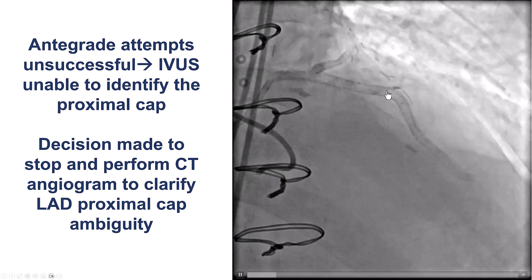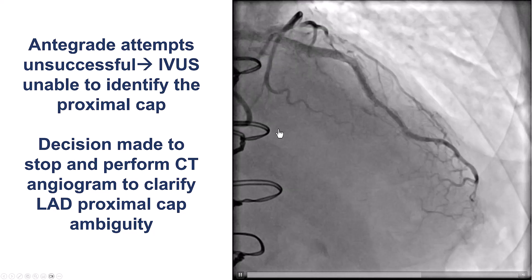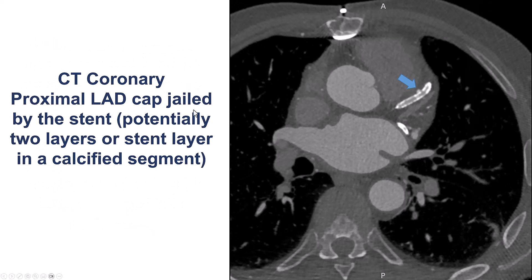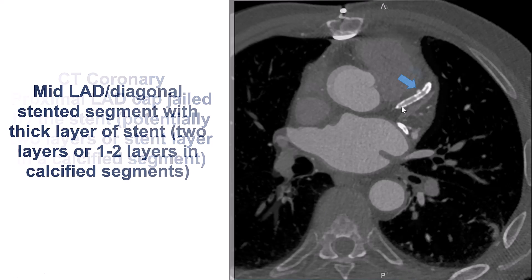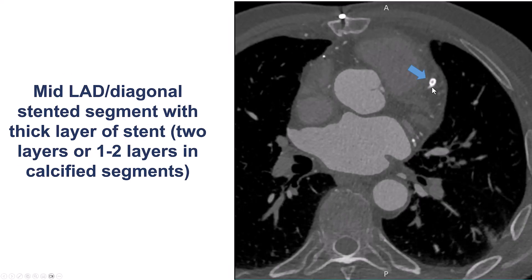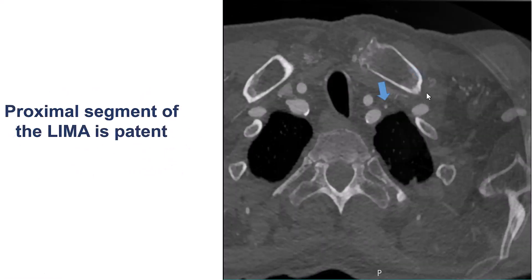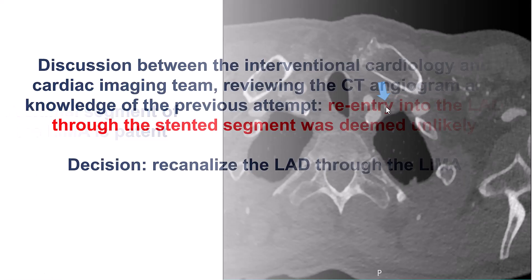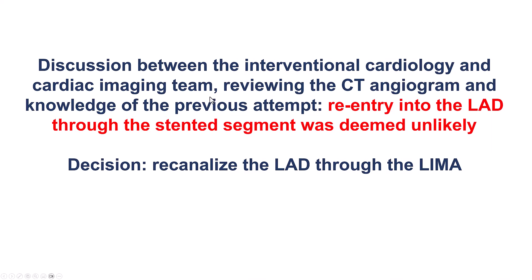IVUS was not helpful — there was just too much stent and calcium and we could not see through it. The plan was to stop and perform CT angiography to better understand the anatomy. CT confirmed heavy calcification, two layers of stent in a very thick segment, which explained the difficulty puncturing through with guidewires. We also saw that the proximal part of the LIMA was patent. After much discussion, the heart team concluded that reentry into the LAD through those stents was quite unlikely.